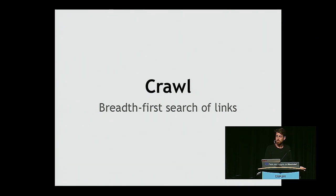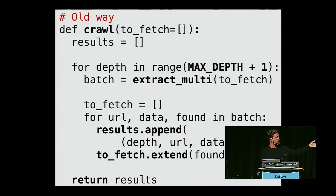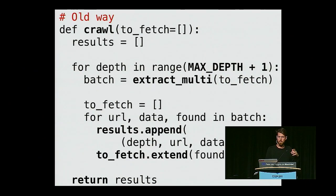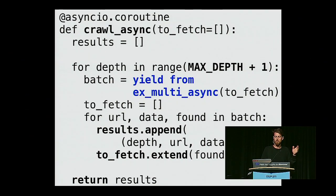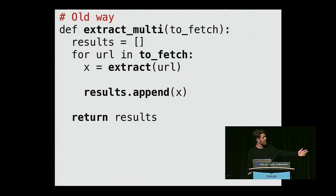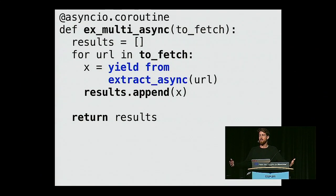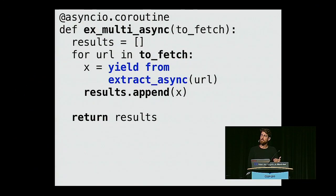How do you do the crawl? This is the same crawl function from before, exactly the same way — one line change: yield from extract_multi_async. Just any time you do I/O, annotate and do a yield from. The extract_multi function changes the same way. However, this has the same problem the original code did — it's still a for loop, still doing all the fetches serially. We actually haven't made anything faster yet. It's asynchronous-enabled, but not actually asynchronous.